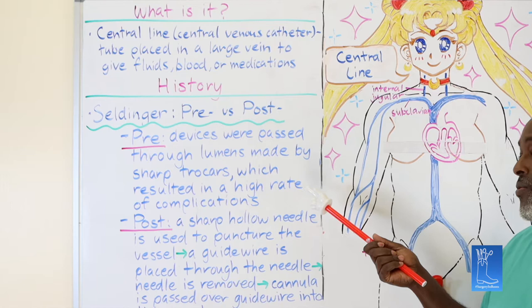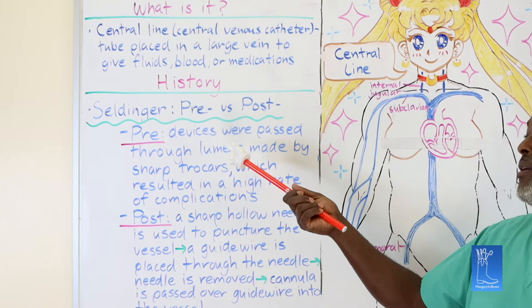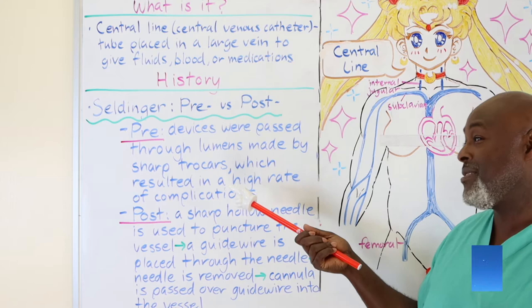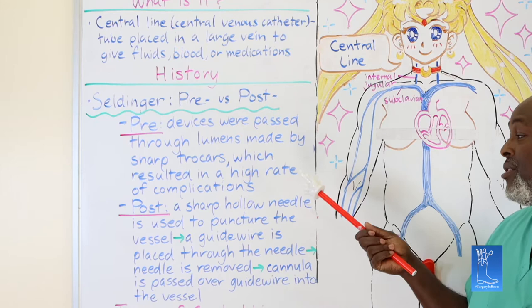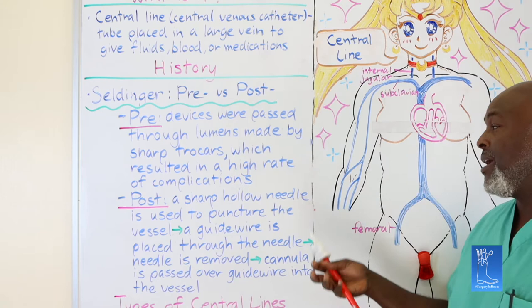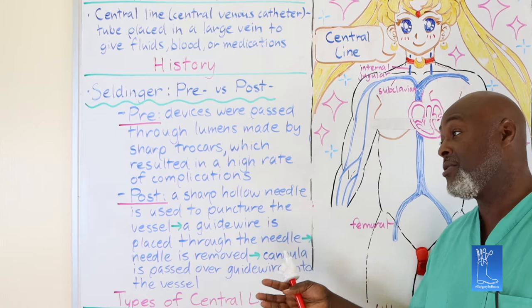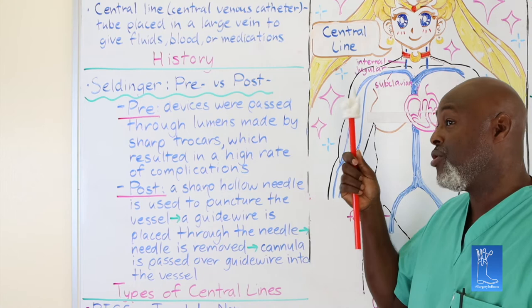Putting in a central venous line at the bedside now takes anywhere from two to ten minutes. Pre-Seldinger, you'd take the patient to the operating room — 15 minutes once prepped, plus another 30-40 minutes to get ready and 30-40 minutes to recover. Versus now: we take a small needle, access the vein — usually under ultrasound guidance — place a guide wire through it, and then upsize to whatever cannula you need, whether putting in a central line, a cardiac stent, or an abdominal aortic aneurysm stent.